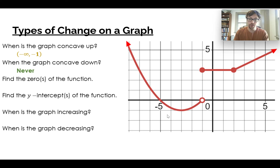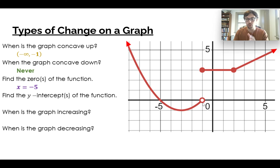Our zeros of our function — we've got a zero right here at negative five. We would not include the one at x equals negative one because there's no actual point there. That open circle means we approach it but don't quite touch it.